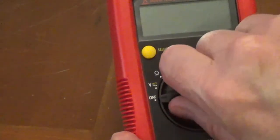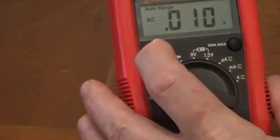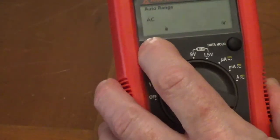It also has a stand that pulls out from the back. Turn the dial to V to test for volts, and you can toggle between AC and DC.